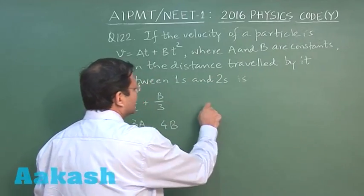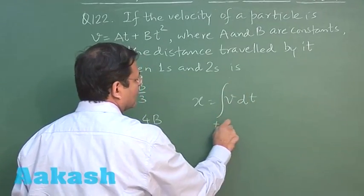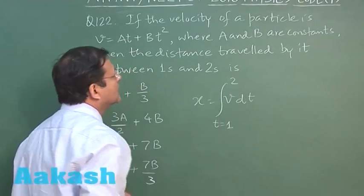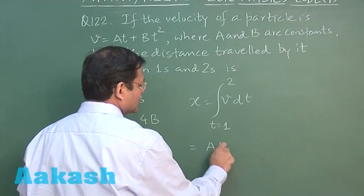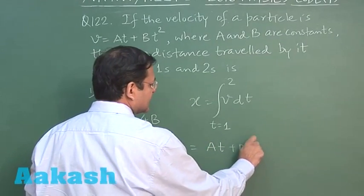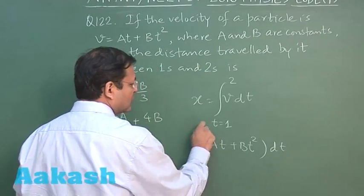So it is very simple - you have to integrate velocity with respect to time between time 1 and time 2. The expression V is At plus Bt square. So if you integrate this with respect to time in between 1 and 2, what do you think? What will you get?